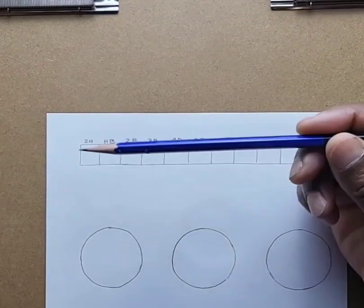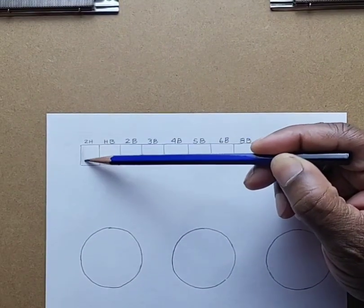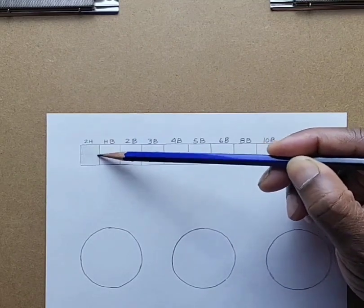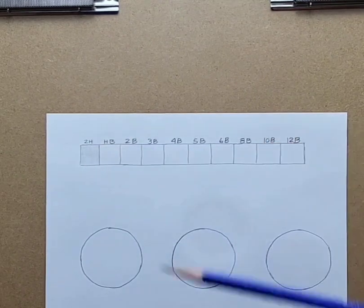Pencils come in various different grades, and in this first part I'm going to show you from a 2H to a 12B in light strokes what each grade of pencil looks like in a box.